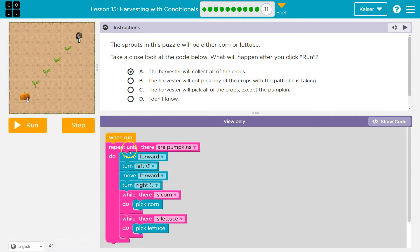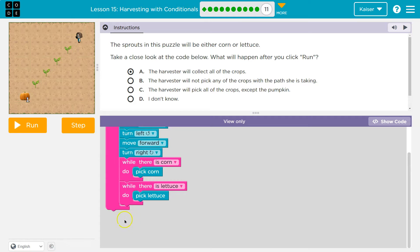Once we hit this pumpkin, repeat until there are pumpkins, this is done. What would I need to do to get me a pumpkin? But I think we're going to get everything until there are pumpkins.